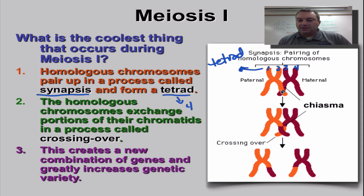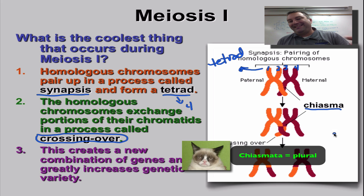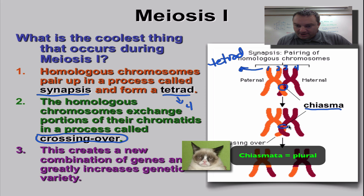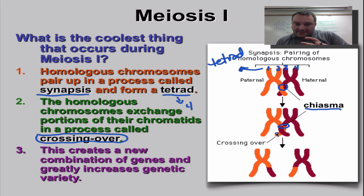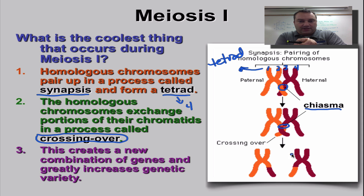Sometimes one chromosome is going to overlap the other, and when that happens, crossing over can occur, because during crossing over they're going to switch places. The point where they cross over is called a chiasma — that's just the point where they cross. At the chiasma, that's where they're going to switch places. Part of this maternal chromosome is going to end up on the paternal chromosome and vice versa. If you want to think about what crossing over is, it's kind of like cutting the deck of cards and rotating it over.